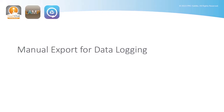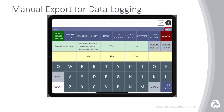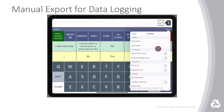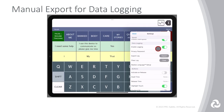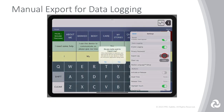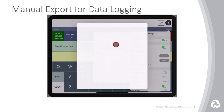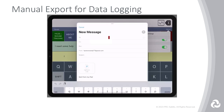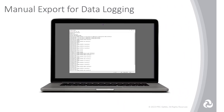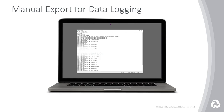You can now manually export a data log file from Dialog AAC, TouchChat, and Lampords for Life. After collecting data within your AAC app, you can choose to manually export a text-only file from the app. You're able to choose your preferred export and share method like email, Google Drive, or Airdrop. And once exported, you can review your data in a text-only file on your computer.